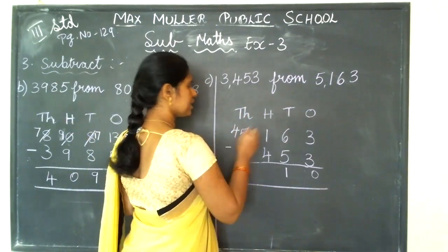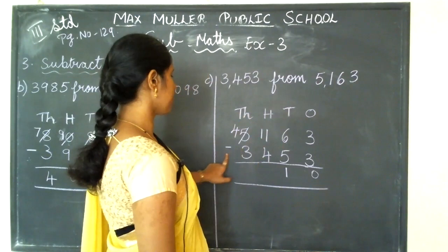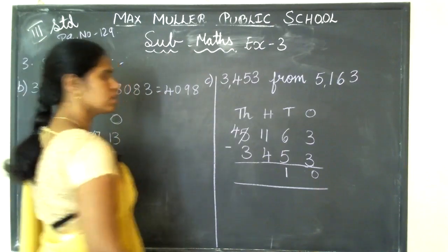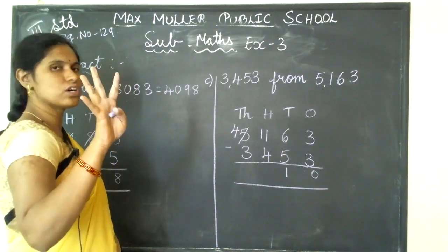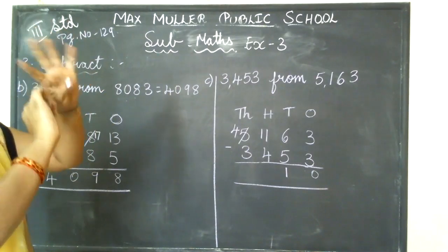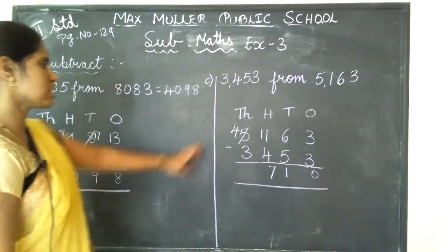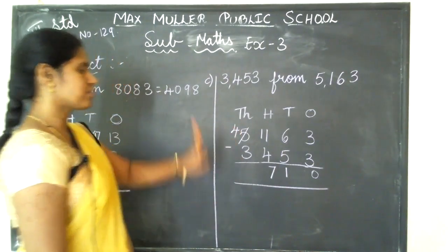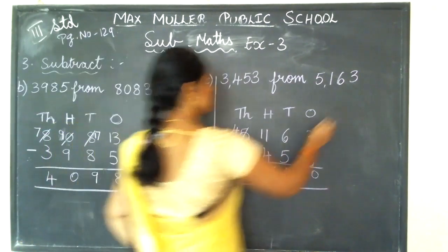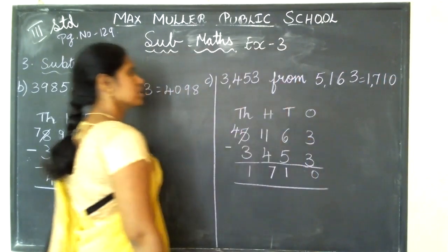I will carry to the hundreds place. In the hundreds place: 11 minus 4 — from 11 if I minus 4, start counting backwards: 11, 10, 9, 8 — the next number is 7. Write 7. Next, in the thousands place: 4 minus 3 — from 4 if I minus 3: 1, 2, 3 — how much is remaining? 1 is remaining. Answer: 1,710.